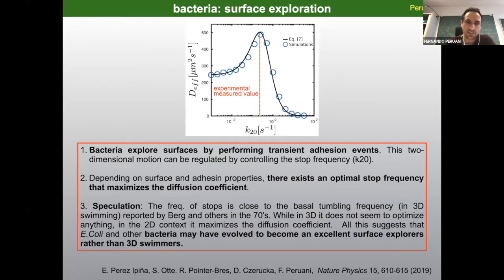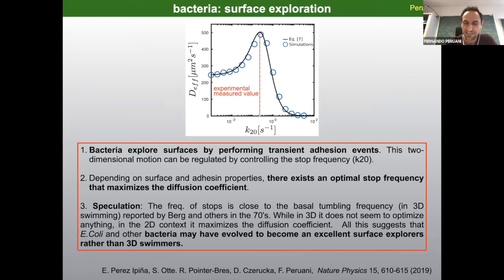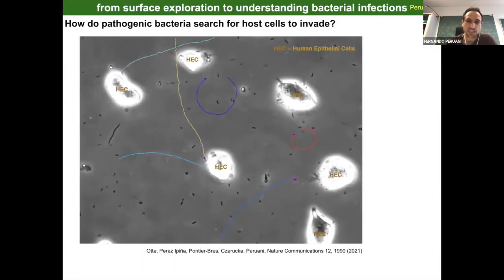So the summary of this part: bacteria explore surfaces by performing transient adhesion events, at least for the ones we have explored. There exists an optimal stop frequency that maximizes the diffusion coefficient. Finally — somewhat speculatively — perhaps bacteria have evolved to become optimal surface explorers rather than very good three-dimensional swimmers, but that is speculation.